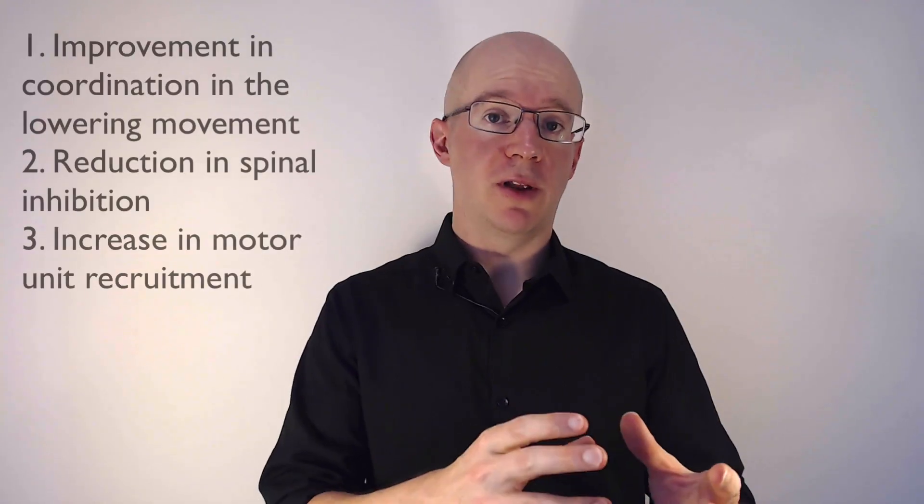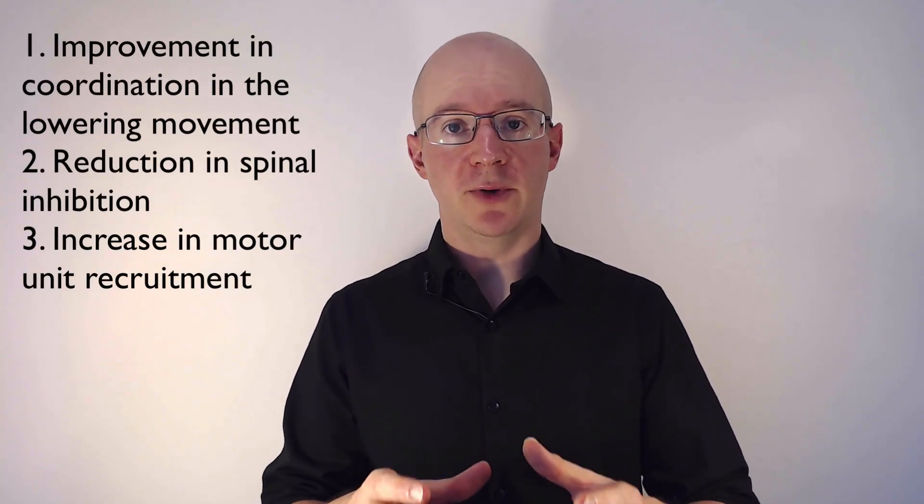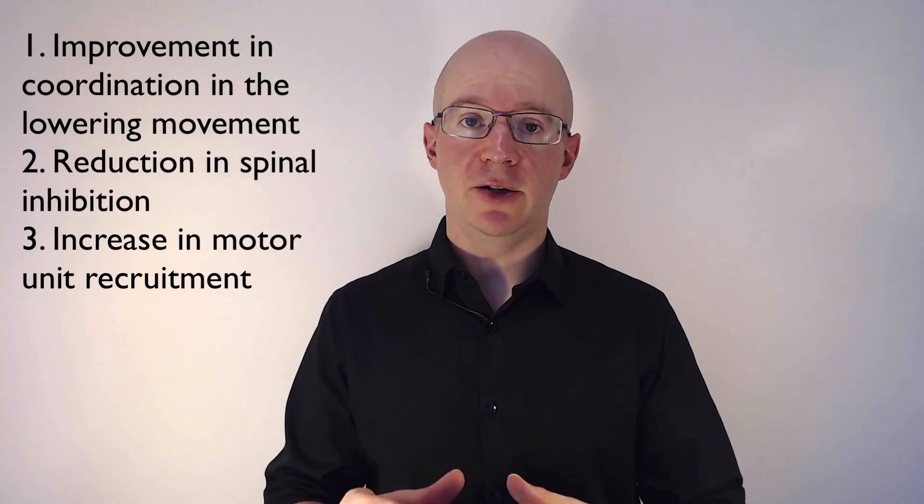The three adaptations inside the central nervous system are an improvement in coordination in the lowering movement, a reduction in spinal inhibition, and an increase in motor unit recruitment. After lowering strength training, coordination improves quite quickly because the lowering movement is quite complex as far as the brain is concerned, and typically we're quite unused to performing lowering muscle actions with high forces. So there's a rapid improvement in coordination as the brain becomes accustomed to what it has to deal with.